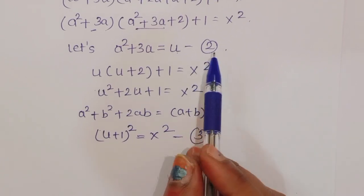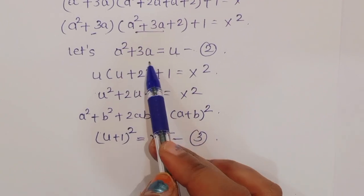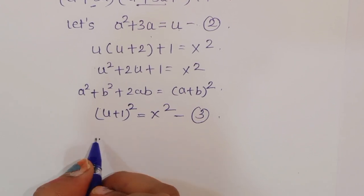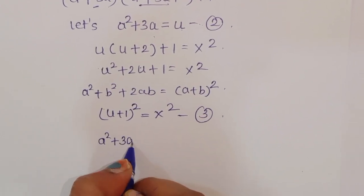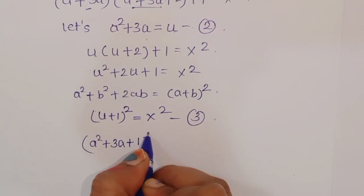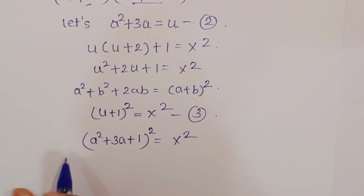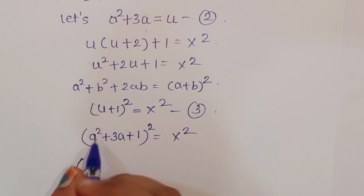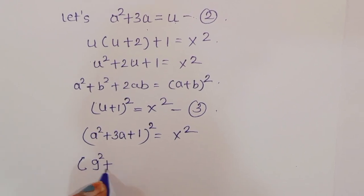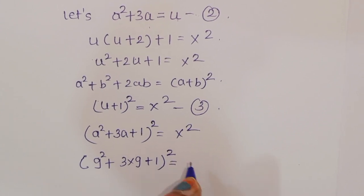Since u equals a squared plus 3a, we write (a squared plus 3a plus 1) whole squared is equal to x squared. Now putting a equal to 9, we get 9 squared plus 3 times 9 plus 1 whole squared, which equals x squared.